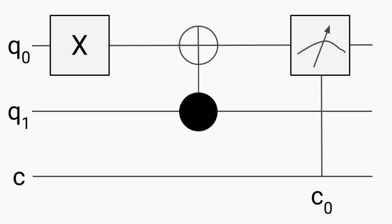Now let's take a look at the final quantum circuit. In qubit 0, we have an X gate applied to it, and then we have a CNOT gate applied to qubit 0 and qubit 1. Qubit 1 is the control qubit, while qubit 0 is the target qubit. Because all qubits are initialized in state 0, qubit 1 is also in state 0. The control qubit, which is qubit 1, is in state 0, so qubit 0 remains unchanged, meaning it is still in state 1. Finally, qubit 0 is measured and stored on classical bit 0. We know that qubit 0 is still in state 1, so the information stored in classical bit 0 would always be 1 with 100% certainty.